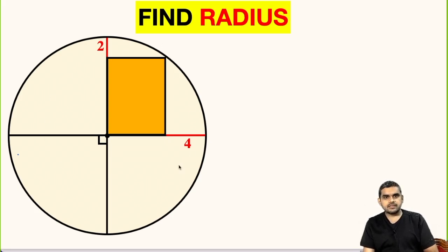In this question we have to find the radius of this circle. Here let us assume the radius to be small r.